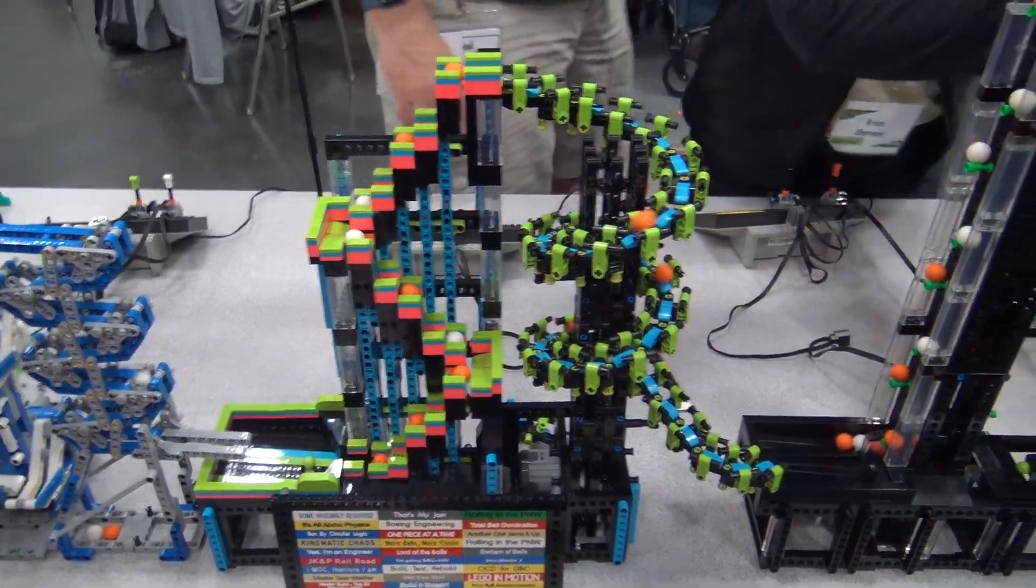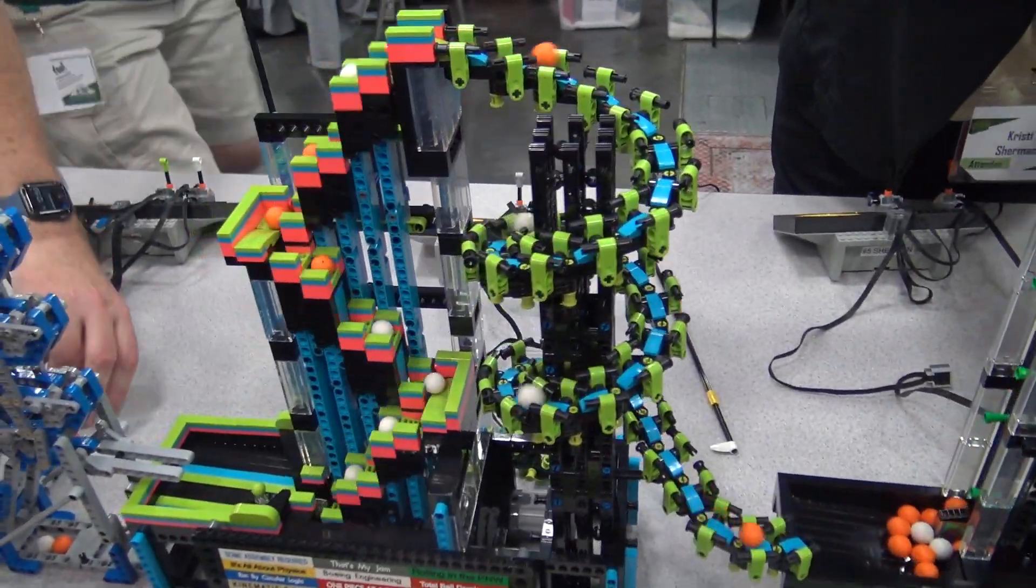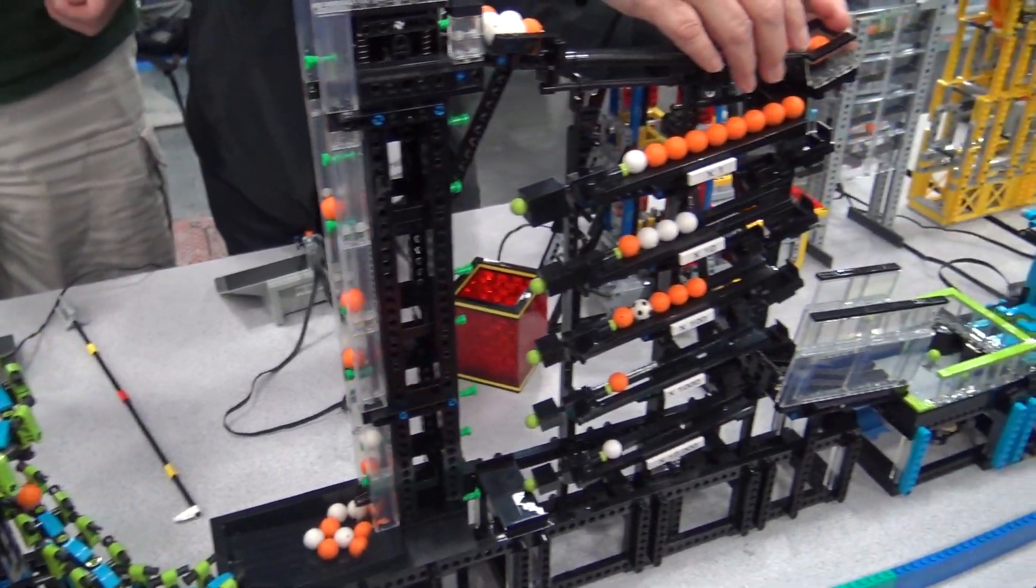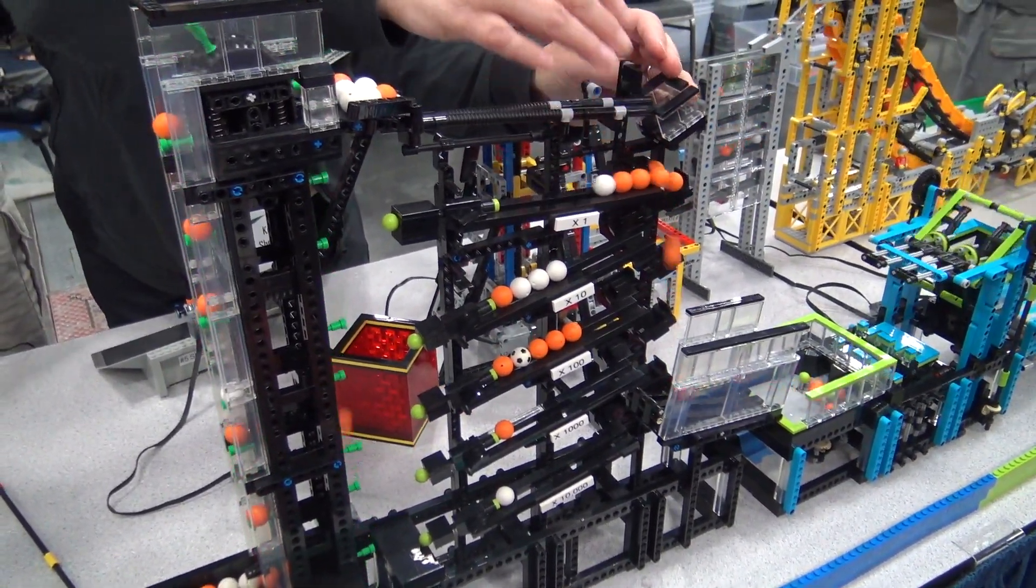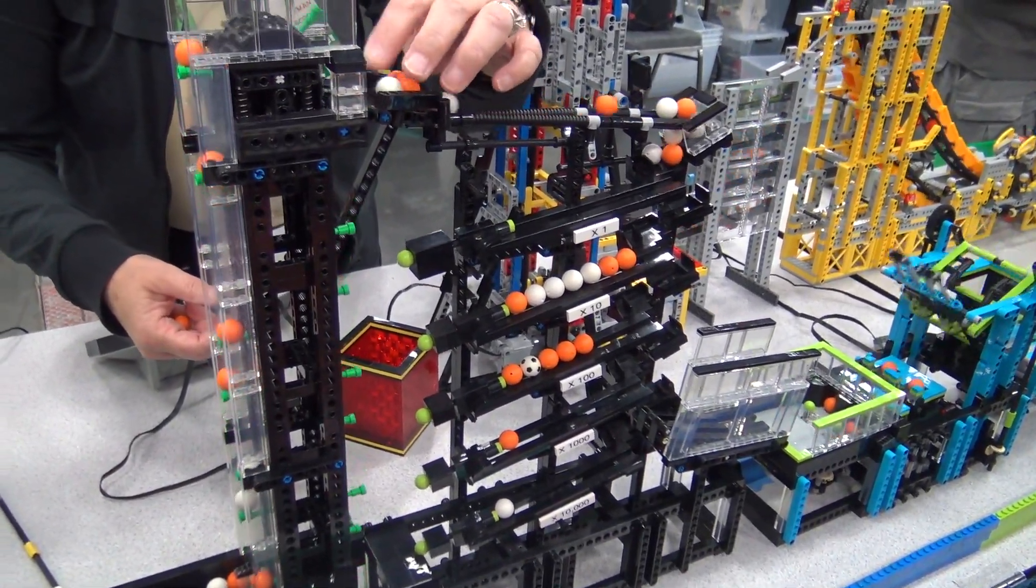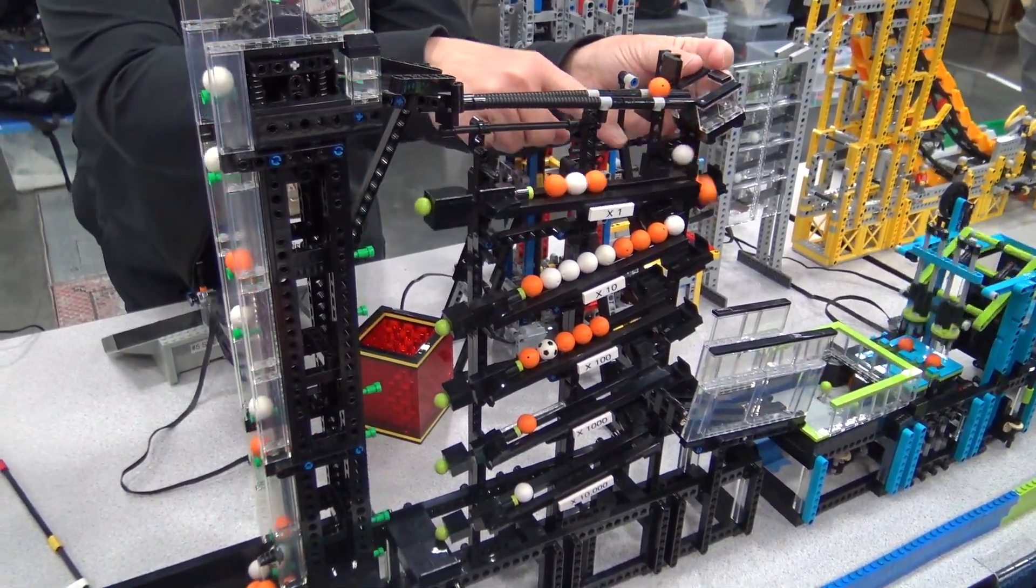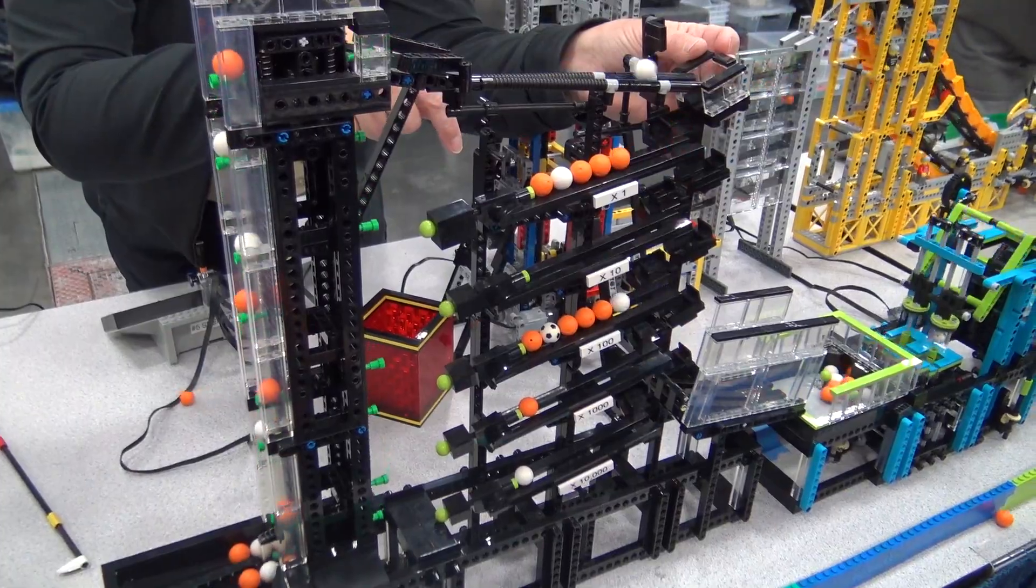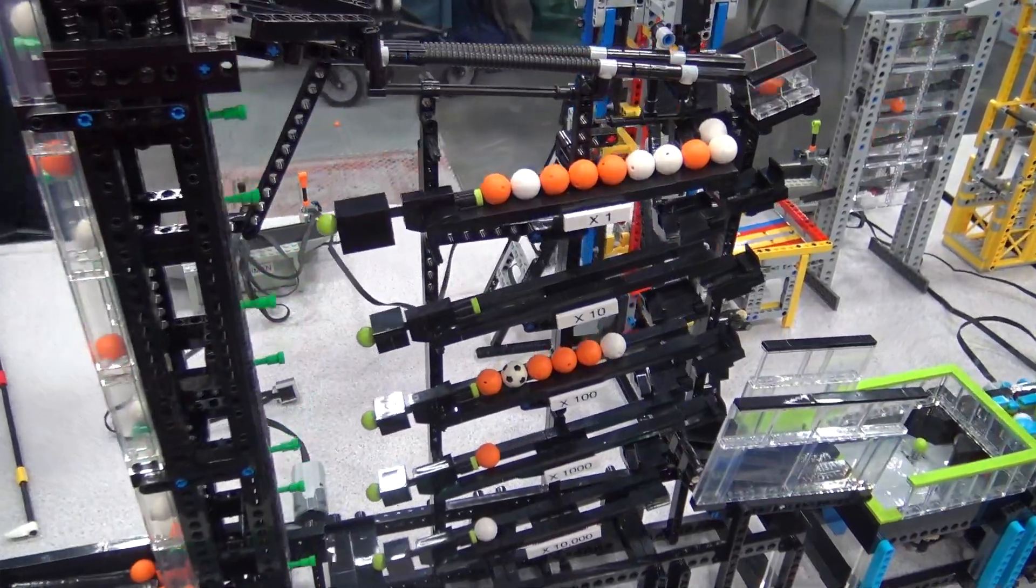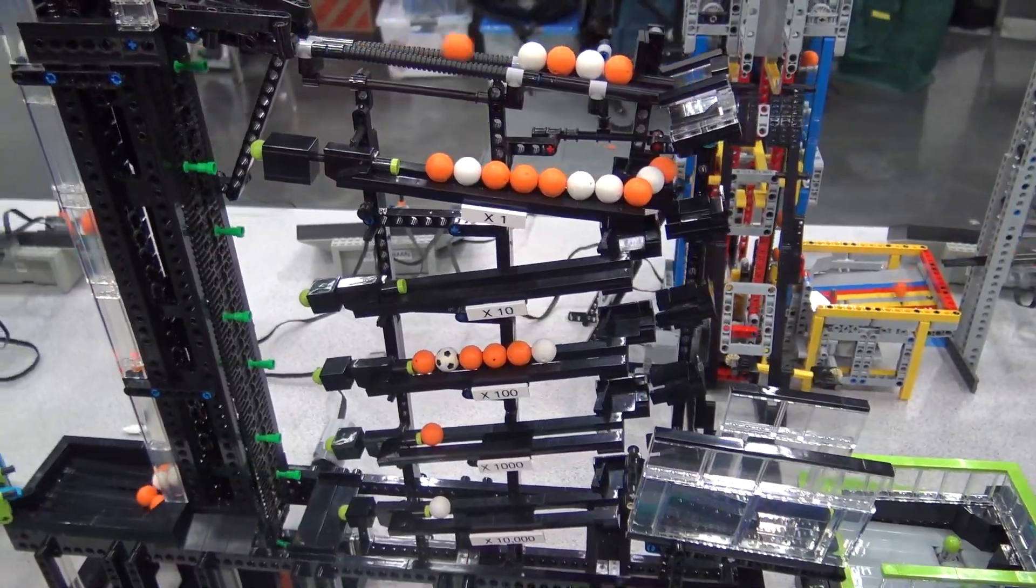The counter module that's next in line has been very delicately balanced, and it's picking up friction or something. It's one of the most popular for the public, because when they figure out it's counting, we have people who come back for the big drops. When it hits 10,000, four of them will all tip at once.